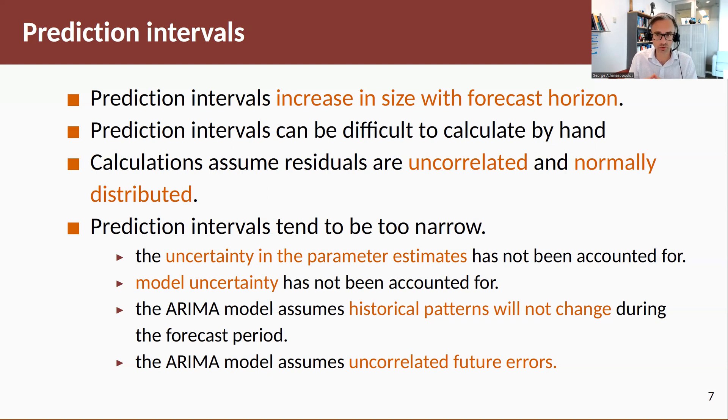If these assumptions are violated, then the coverage of prediction intervals will not be true. And of course, as we mentioned with ETS models as well, prediction intervals tend to be too narrow. This is because we don't account for all sources of uncertainty. We don't account for the uncertainty in the parameter estimates, we take these as being true parameters. We don't account for the model uncertainty, we take the model as being true. Also, in ARIMA models we assume that historical patterns will not change and that future errors are uncorrelated, which might not be the case.